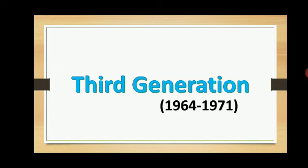In the previous video, in the first generation we discussed vacuum tubes, punch cards, and paper tape, starting from 1940 to 1956. In the second generation, starting from 1956 to 1963, transistors were used.